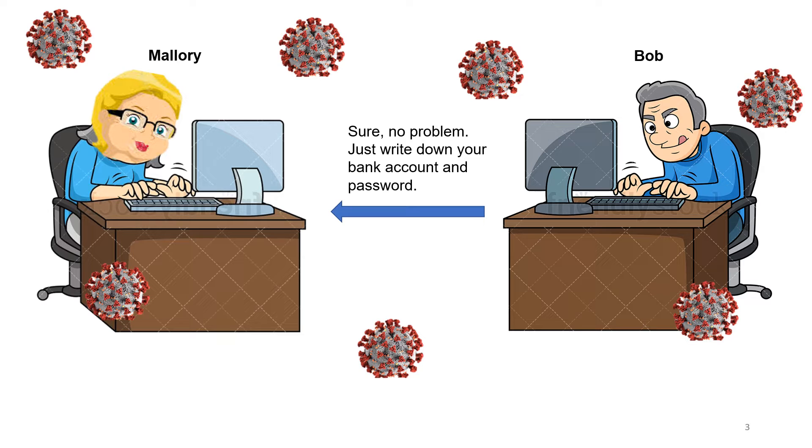On the other hand, Alice doesn't know if the person on the other side is actually Bob or some other person claims to be Bob and now has all the details of her bank account. So, the missing ingredient here for a safe and trusted transaction is a solid identification method and even continuous identification.